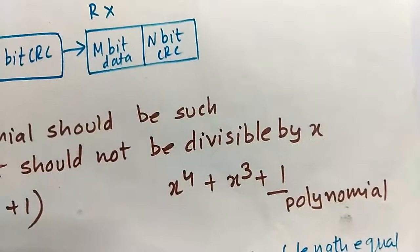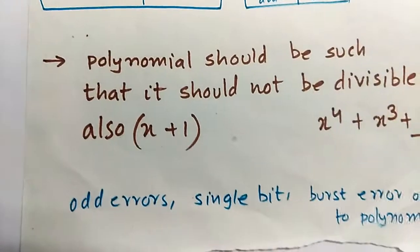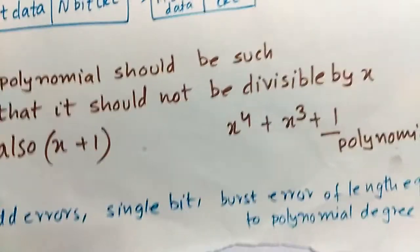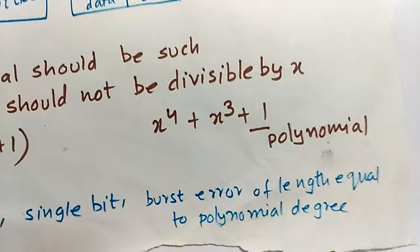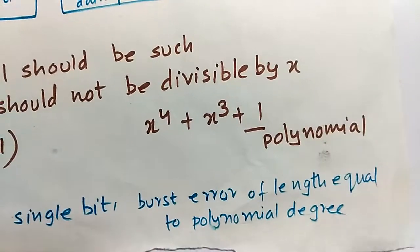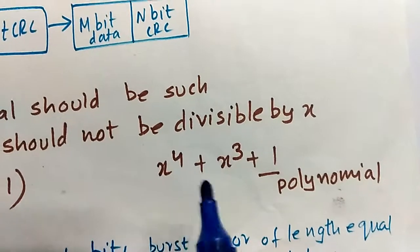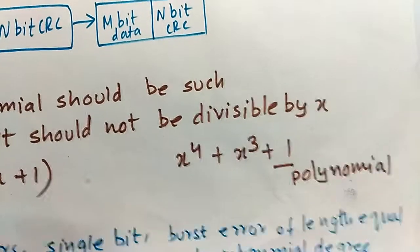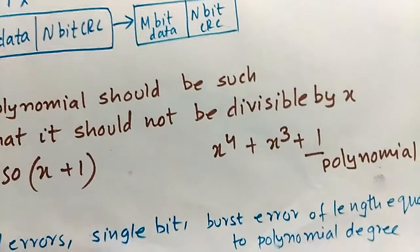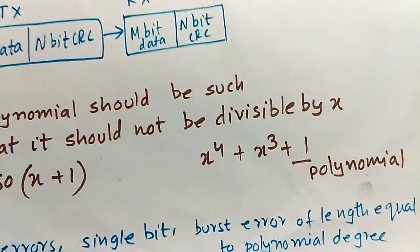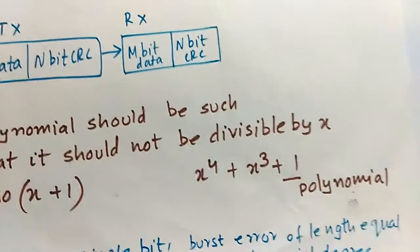CRC is used for detecting odd errors, single bit errors, and burst errors. The number of burst error bits it can detect is equal to the length of the highest polynomial degree. In our example the highest degree is 4, so we can detect up to 4 bits of burst errors in our message data.